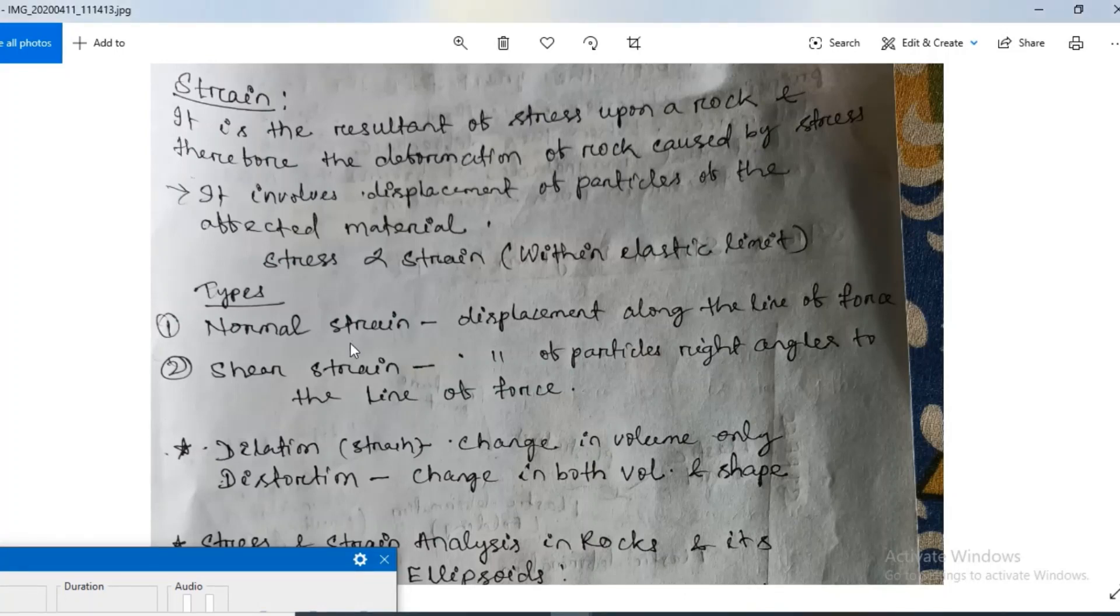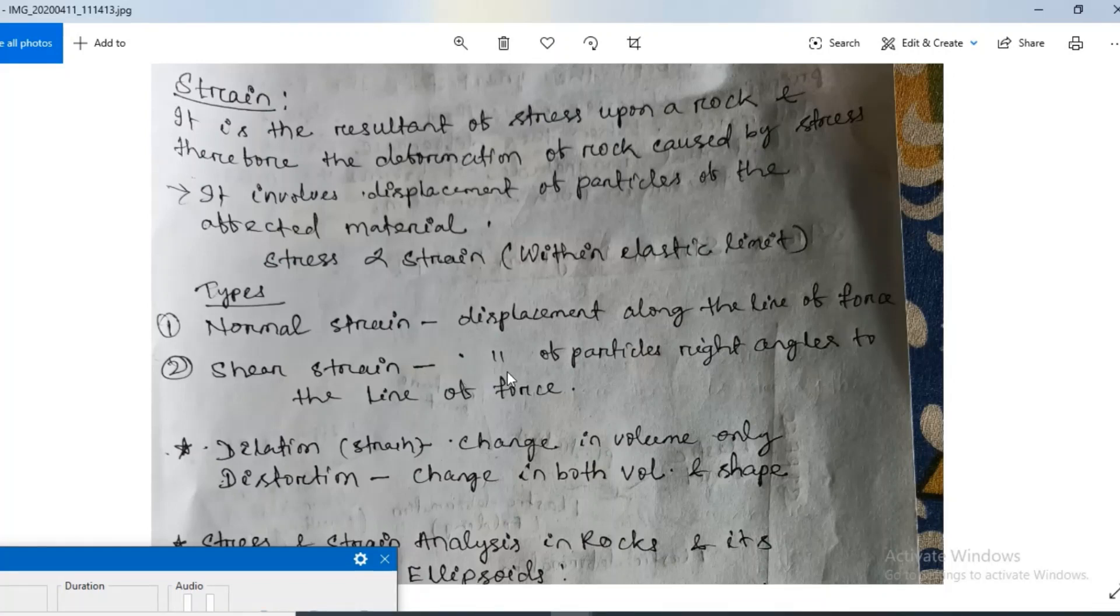When stress increases, strain also increases. There are two types of strain: normal strain and shear strain. Normal strain is when displacement occurs along the line of force. Shear strain occurs when displacement of particles is at right angles to the line of force.